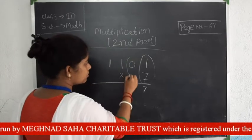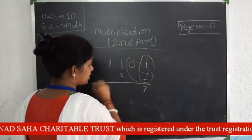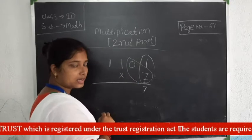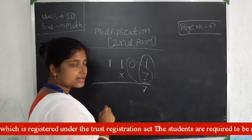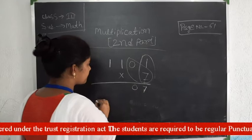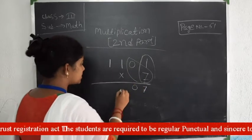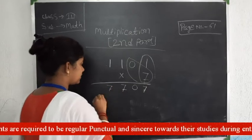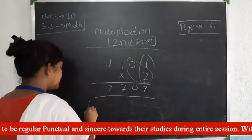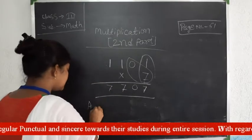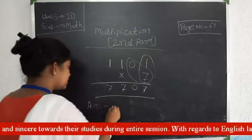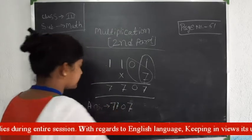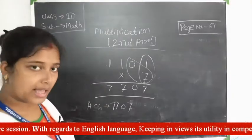Then 0 multiplied by 7 — when you multiply 0 with any number the answer will be 0. Then again 1 times 7 is 7. So the final answer is 707.